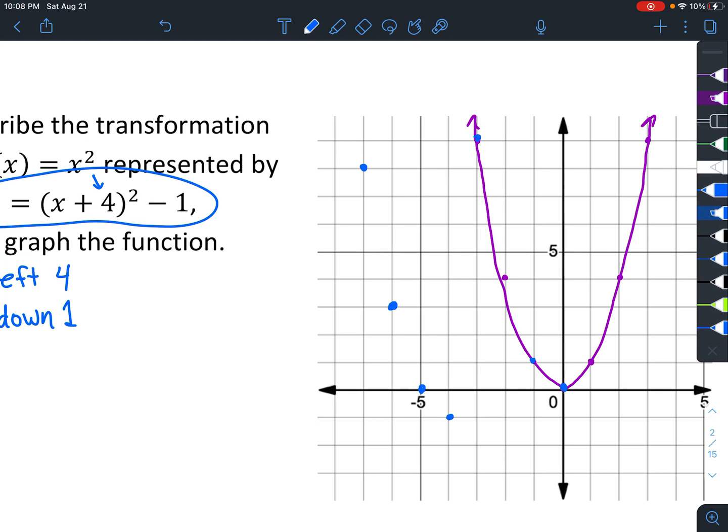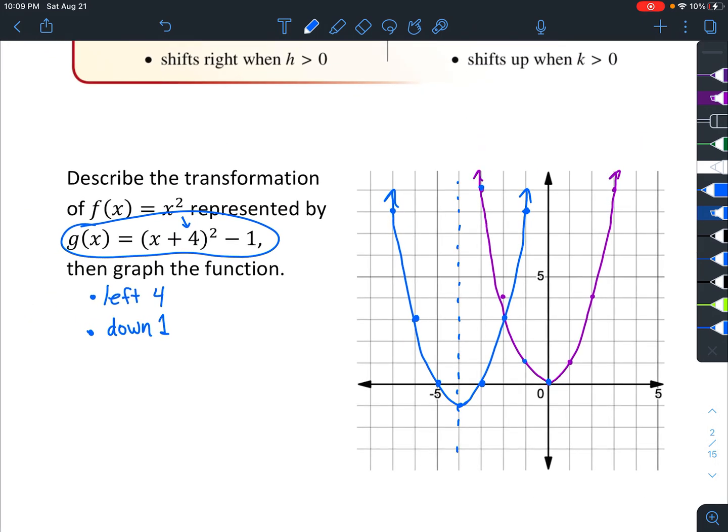Do the same thing with the ones on the right. Or actually, since we have our axis of symmetry, reflect it to the other side. Alright, so now we have our parabola, already transformed to its current shape.